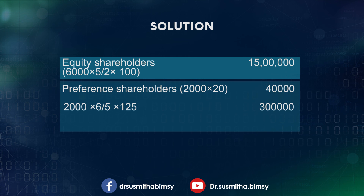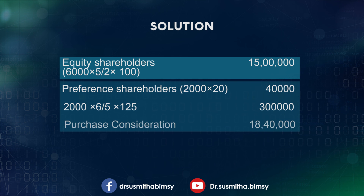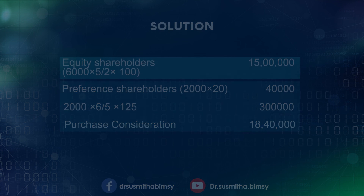Finally, the total purchase consideration: payment to equity shareholders is ₹15 lakh. Payment to preference shareholders includes ₹40,000 in cash and ₹3 lakh in preference shares. Adding these together: ₹15 lakh + ₹40,000 + ₹3 lakh = ₹18 lakh 40,000. So the purchase consideration as per the net payment method is ₹18,40,000.